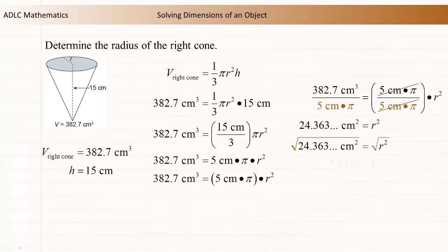To determine the value of r, take the square root of both sides of the equation. r is approximately equal to 4.9 centimeters. The radius of the right cone is approximately 4.9 centimeters.